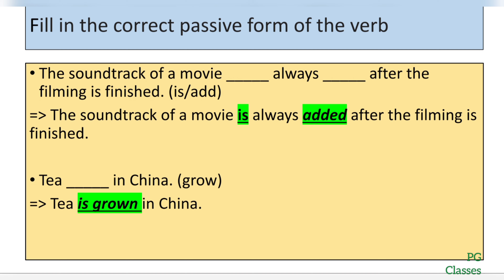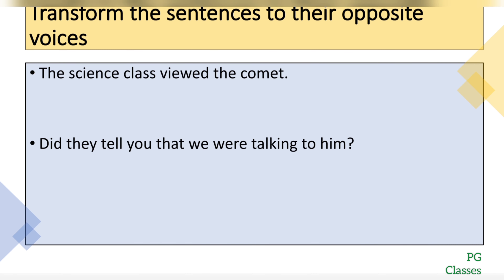Those who have watched the previous videos and kept the table format in mind will be good to go for these sentences. Now, another type of question: a sentence is given and you are asked to convert it into its opposite voice. The first thing to do is identify the voice of the sentence. Check if it is in SVO format — Subject, Verb, Object — which we have been discussing from the very first video. If it is SVO, it's active; if the object comes first, the sentence is passive.